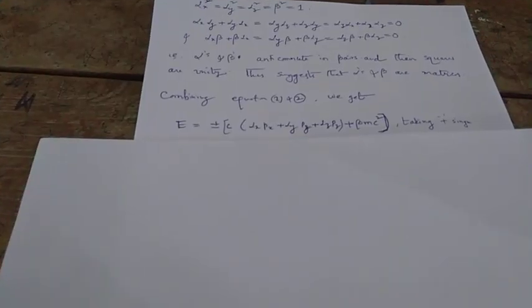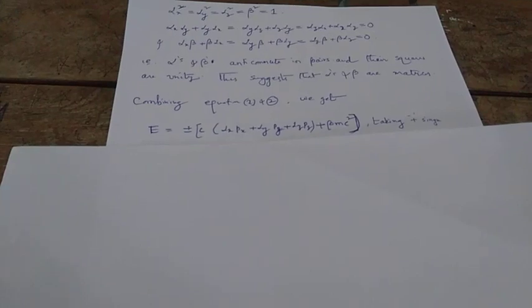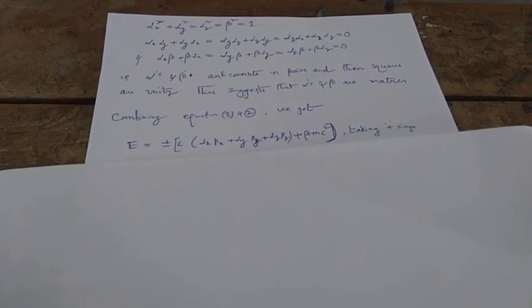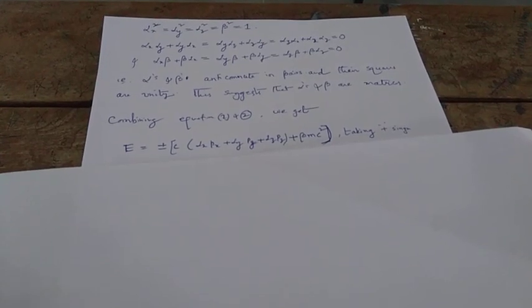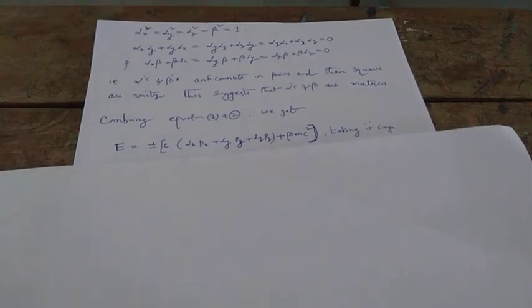If you combine equations 1 and 2, we can write the energy as E = ±[c(αₓpₓ + αᵧpᵧ + αᵤpᵤ) + βmc²]. If you take only the positive sign and replace E with its operator form and the momentum components with their operator forms...